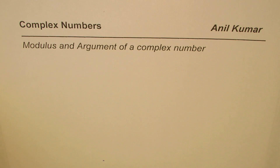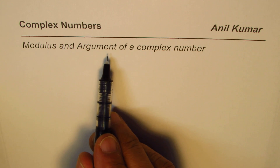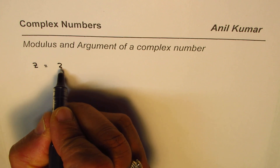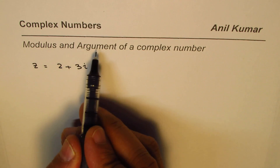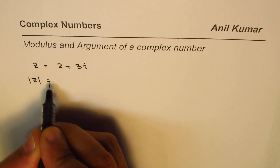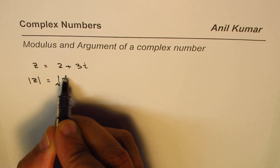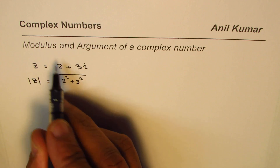I'm Adil Kumar. We are exploring complex numbers, and in this video we will learn how to find modulus and argument of a complex number. Let me take up an example: let's say the complex number z equals 2 plus 3i. In that case, modulus is the magnitude, written as modulus of z, which equals the square root of a squared plus b squared, which is 2 squared plus 3 squared.